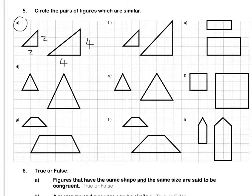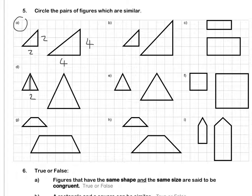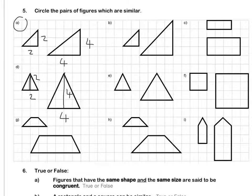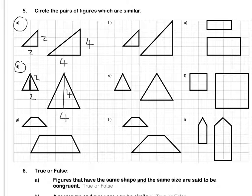Let's look at D. My small triangle: the base is two, and the height, if I count going straight upwards, it's two units. For the bigger triangle, the base is four units, and if I count the blocks going straight upwards, the height is four units. The triangles are the exact same shape and the corresponding lengths are in the same ratio. Therefore, the triangles in D are also similar.